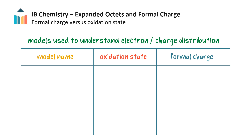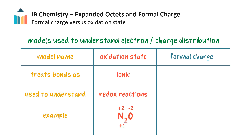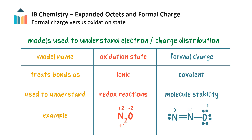Both formal charge and oxidation state are models used to understand electron or charge distribution in compounds, but they are used for different purposes. Oxidation state treats compounds as if they were ionic and helps us understand charge transfer in redox reactions, while formal charge treats all bonds as covalent and helps us understand the stability of molecules. Together, both tools are used to understand the reactivity, bonding, and stability of a chemical species.